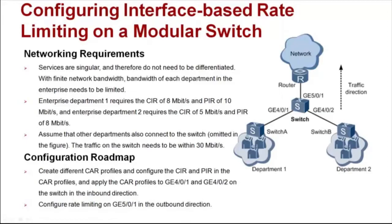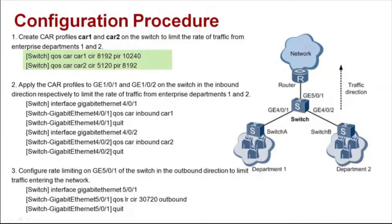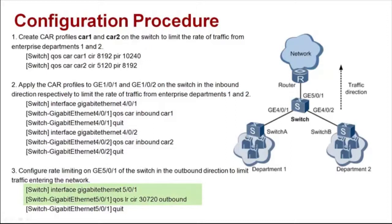Let's see the configuration. Create CAR profiles — CAR 1 and CAR 2 — on the switch to limit the rate of traffic from Enterprise Departments 1 and 2. In CAR 1, set the CIR to 8192 kbps and PIR to 10240 kbps. In CAR 2, set the CIR to 5120 kbps and PIR to 8192 kbps to meet the requirement of Enterprise Department 2. Outbound rate limiting on a modular switch is similar to that on a fixed switch — configure CIR in the interface view. The default CBS is used if CBS is not configured.